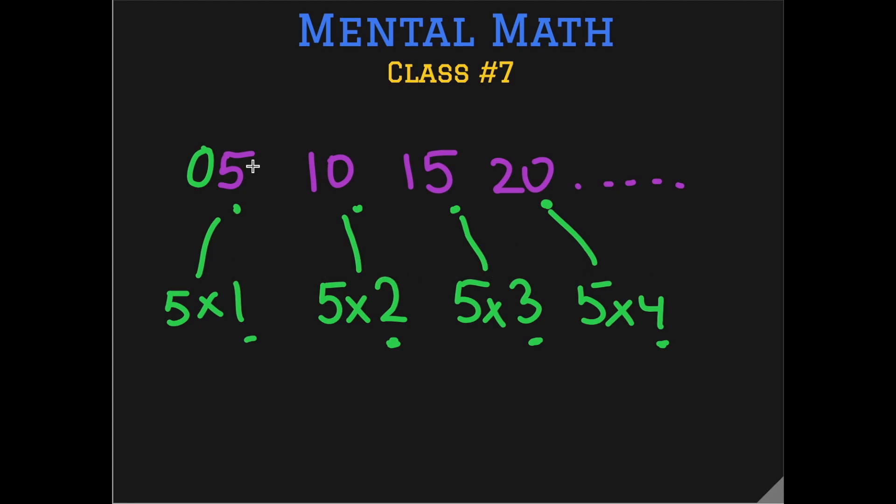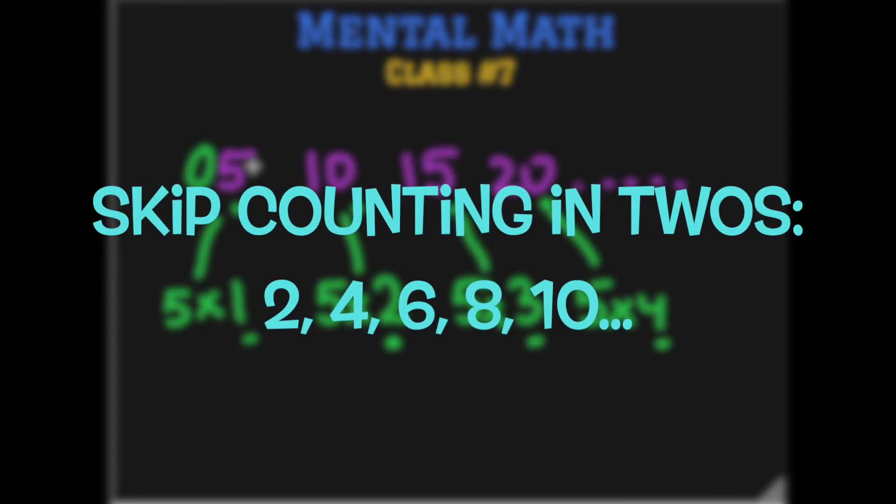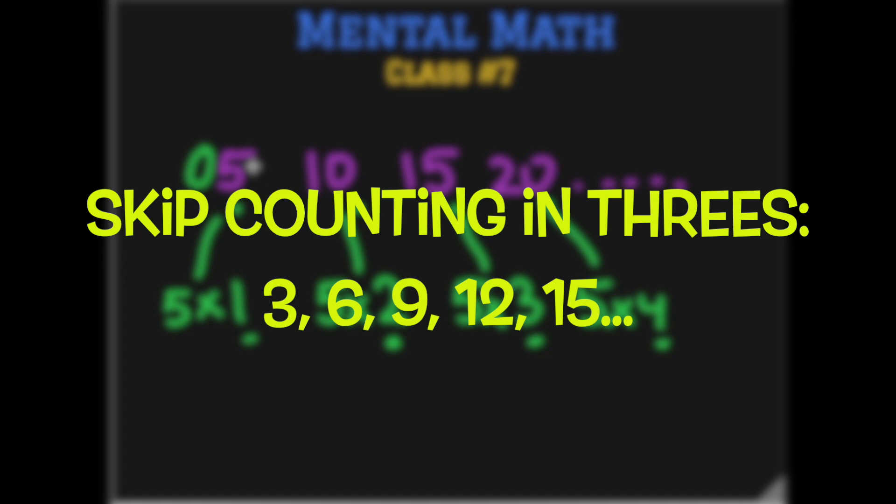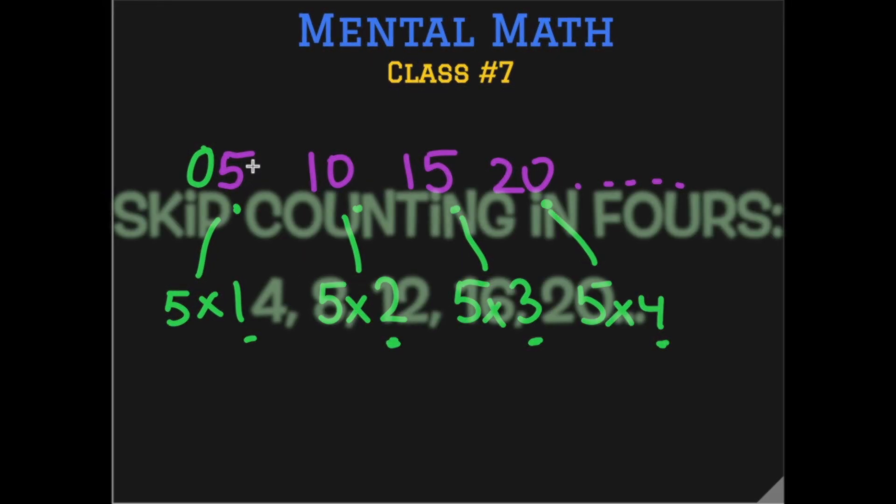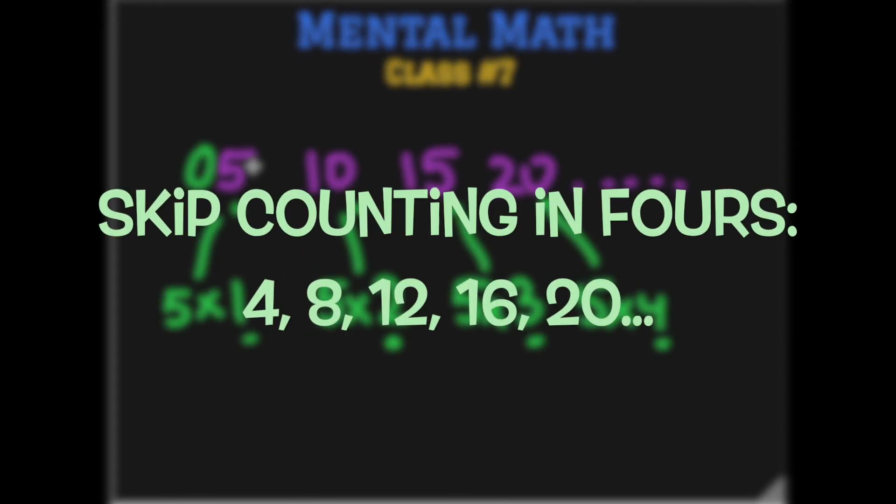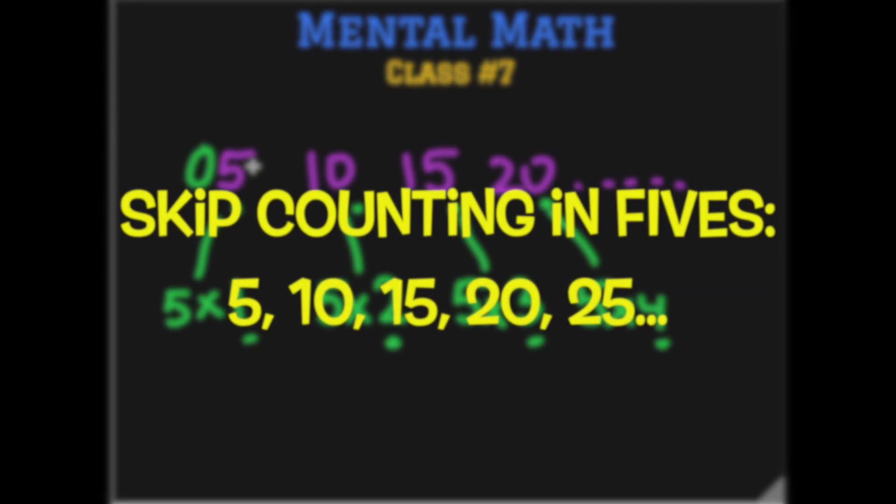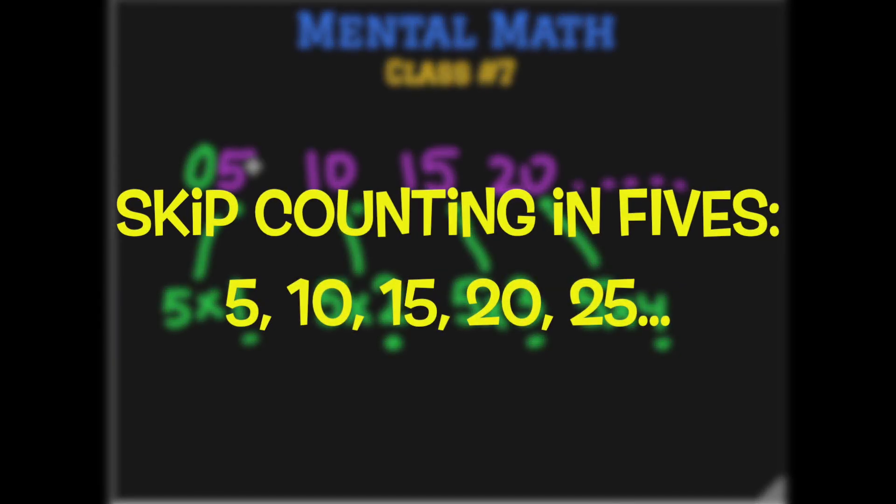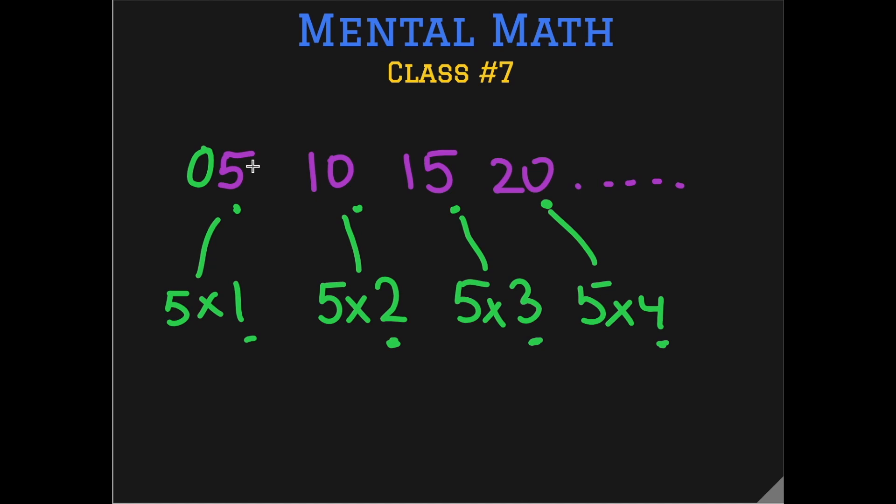We first learn the skip count sequence: 2, 4, 6, 8, 10 in the case of table of 2; 3, 6, 9, 12 in the case of table of 3; 4, 8, 12 and so on for the table of 4; and 5, 10, 15, 20 till 50 for the table of 5. Then we associate it with the actual expressions and this way we learn it.